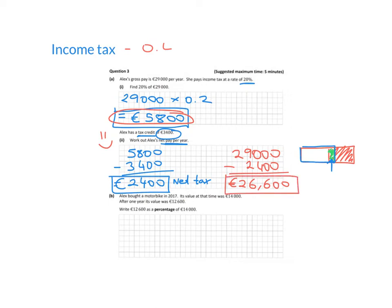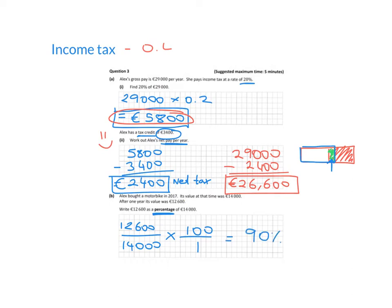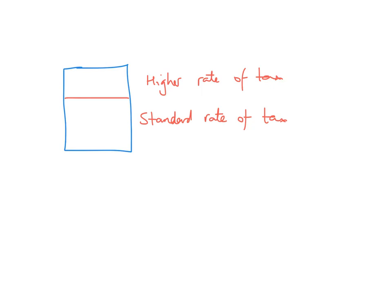Always do a common sense check: if any income tax was paid, net pay should be less than gross pay. The second part of Alex's question: a motorbike bought in 2017 for €14,000 was worth €12,600 after one year. Write €12,600 as a percentage of €14,000: (12,600/14,000) × 100 = 90%.